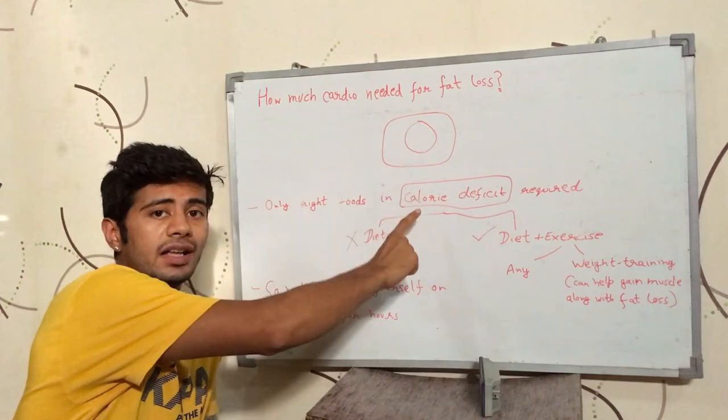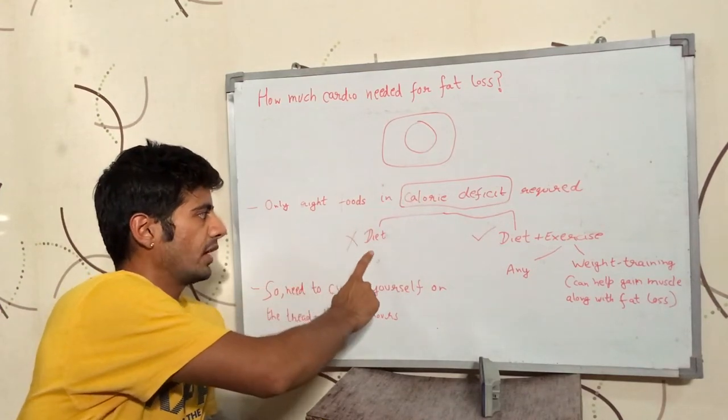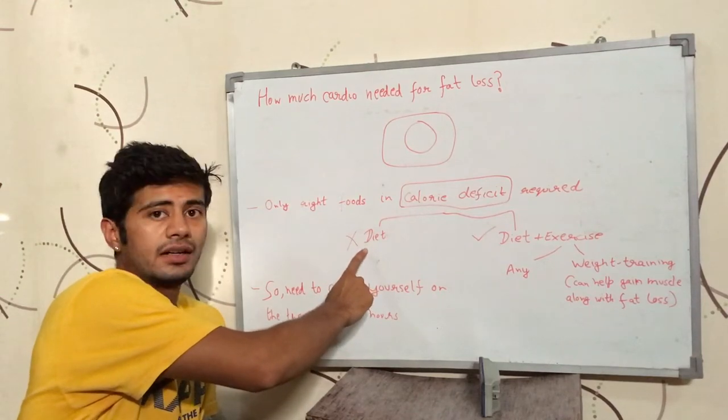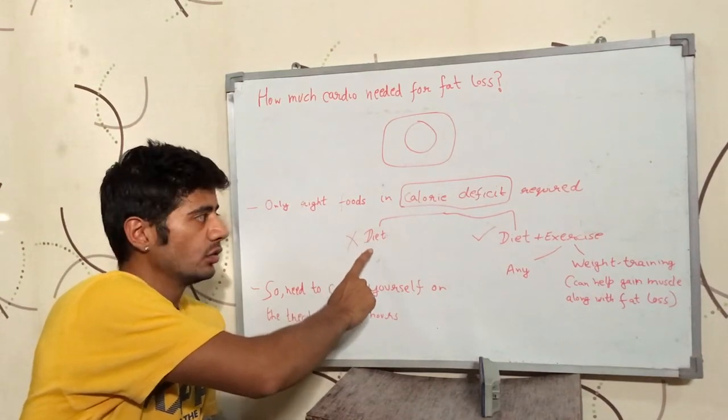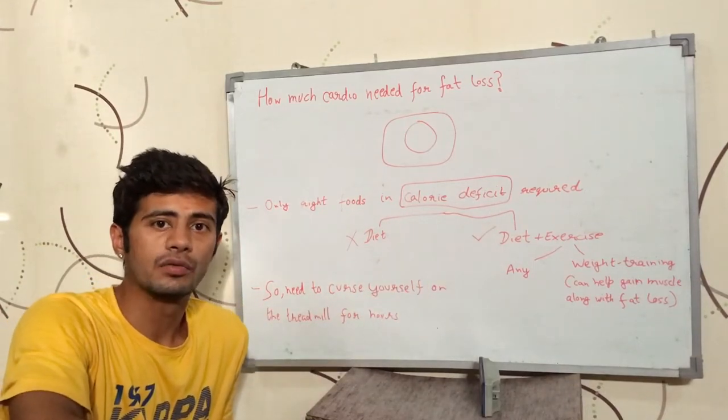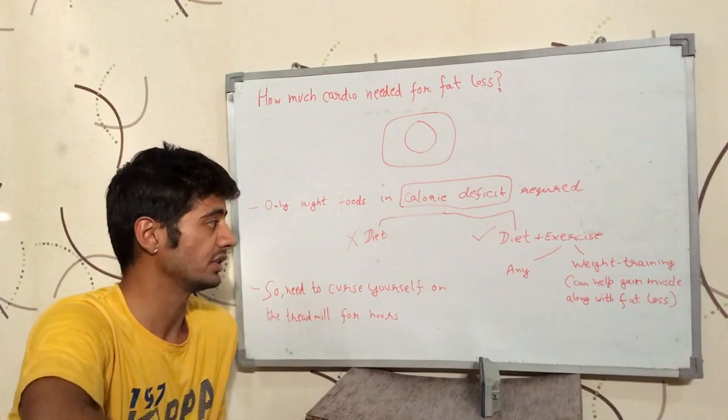So, be in a calorie deficit, eat the right foods and you will lose fat. Okay. So, how to create a calorie deficit? Either you can stop exercising and reduce the diet and reduce the amount of calories you taking or you do exercise along with your diet and create a calorie deficit.